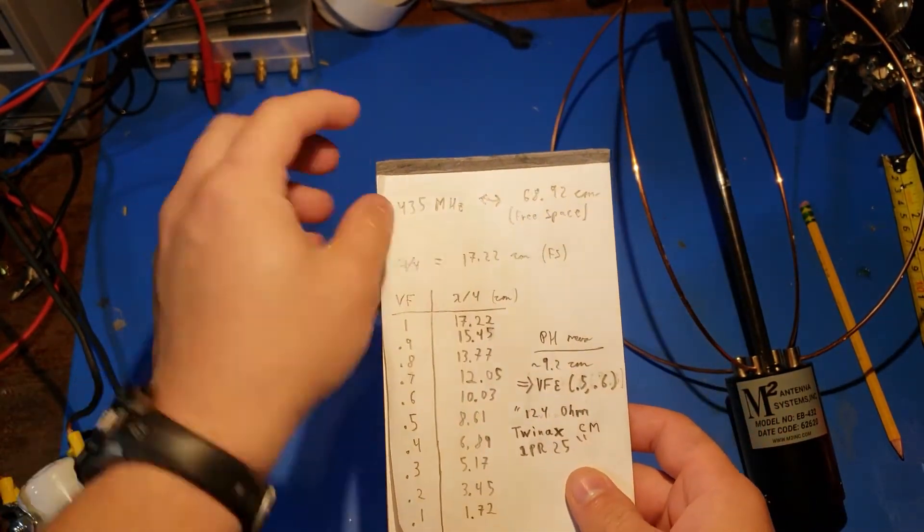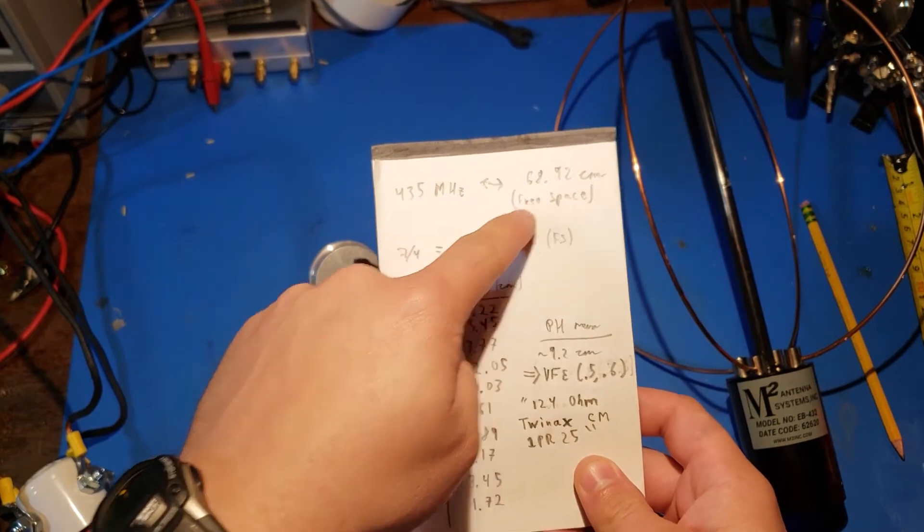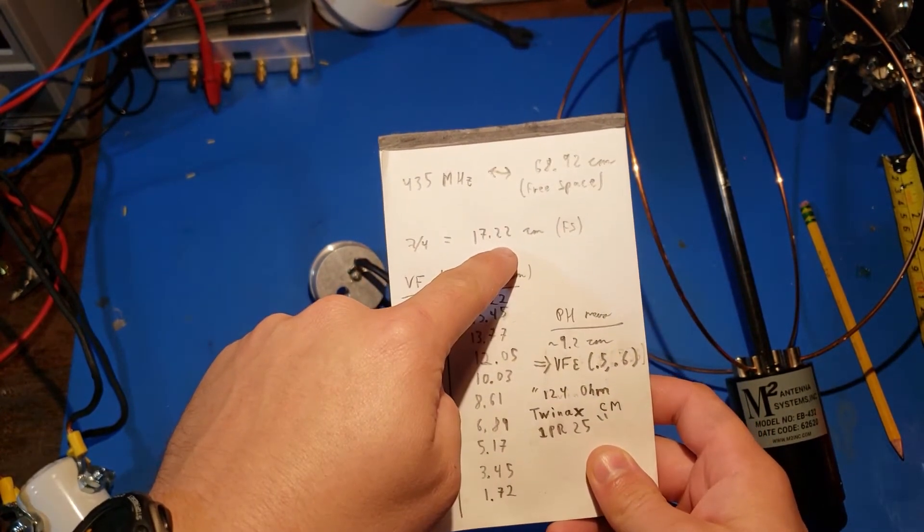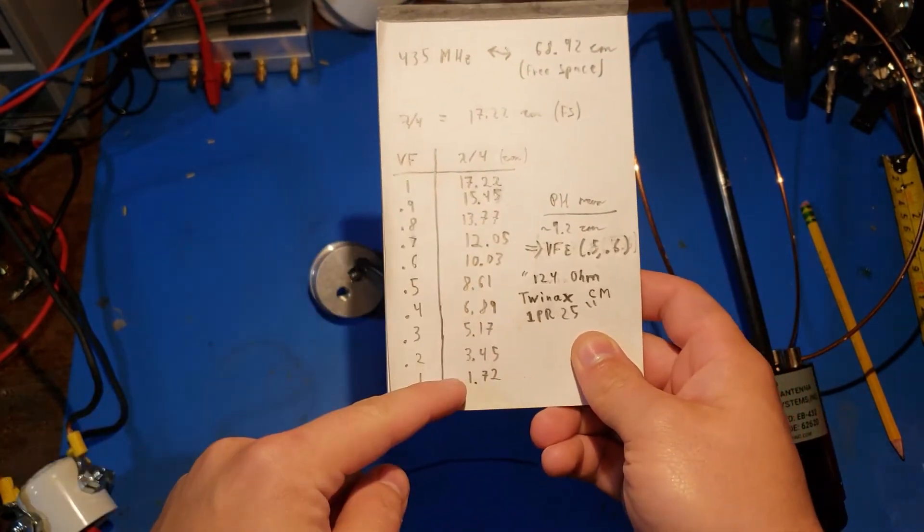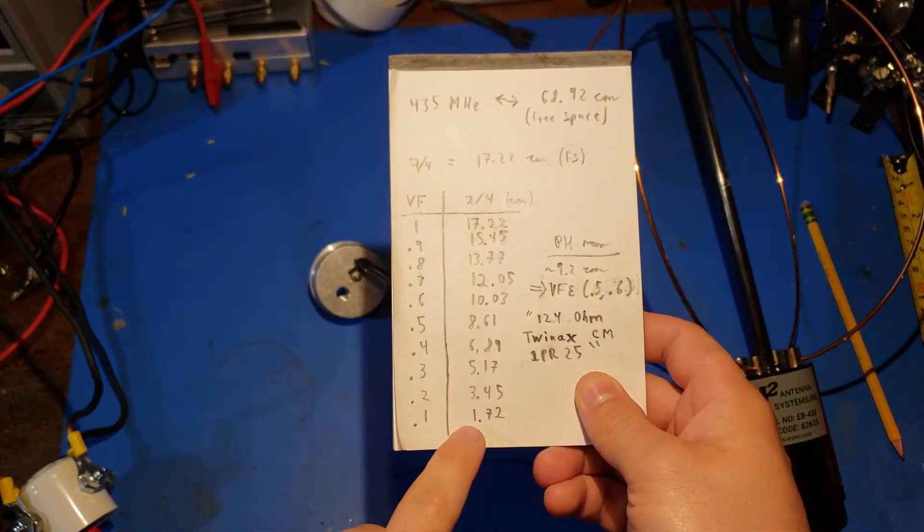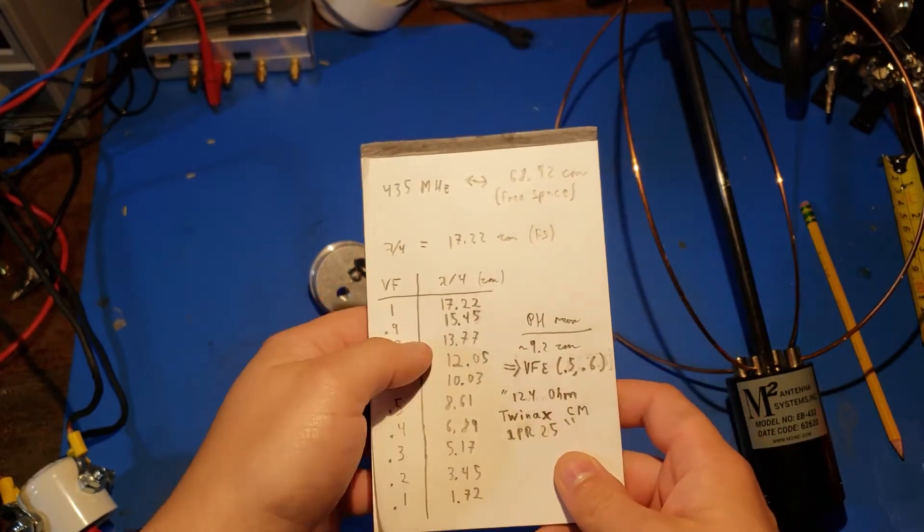I've made this cheat sheet right here that gives us the wavelength of 435 megahertz, what lambda over 4 is for a 90 degree phase shift, and then a chart for velocity factor versus the length of that lambda over 4 line in centimeters here.